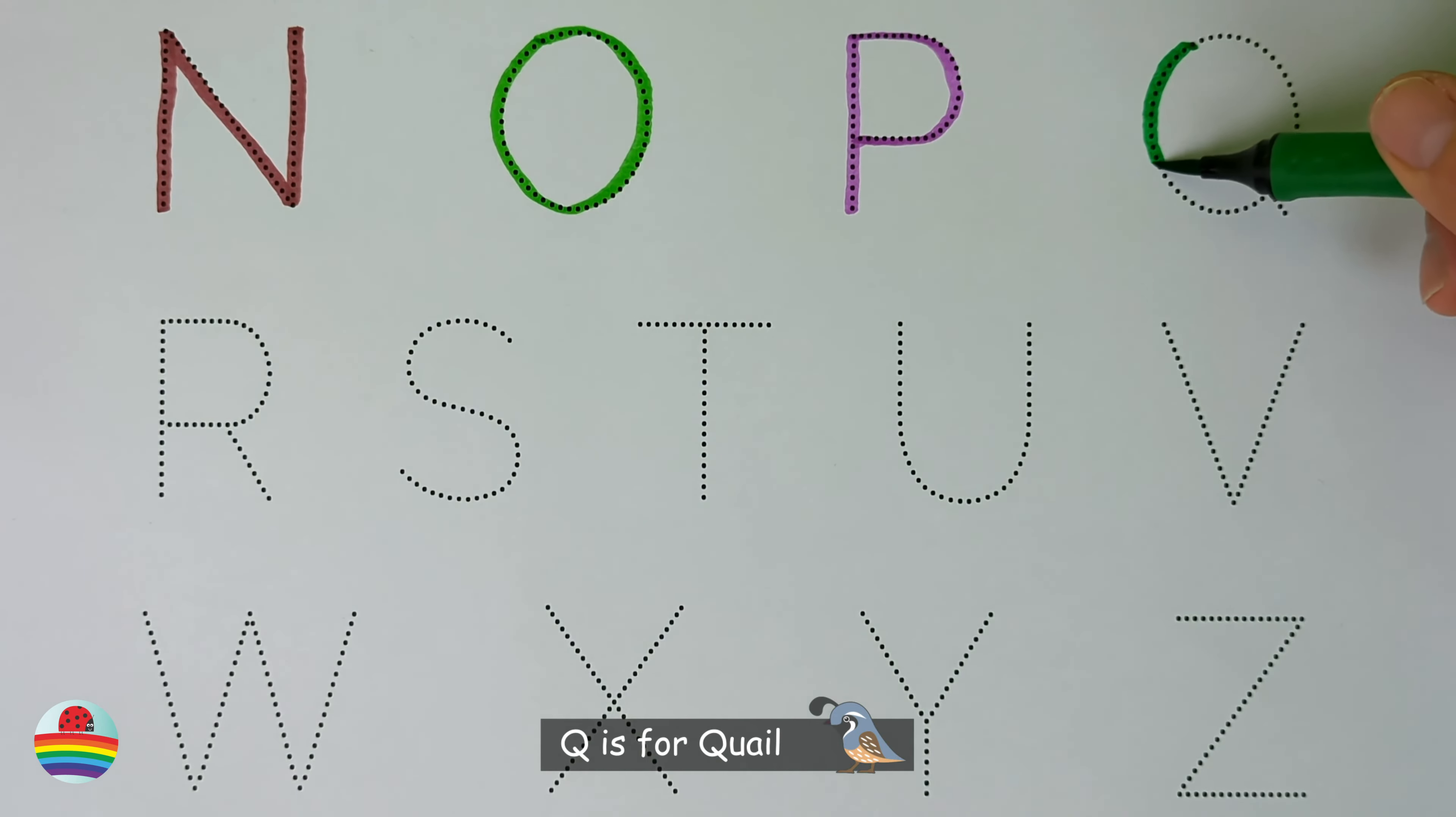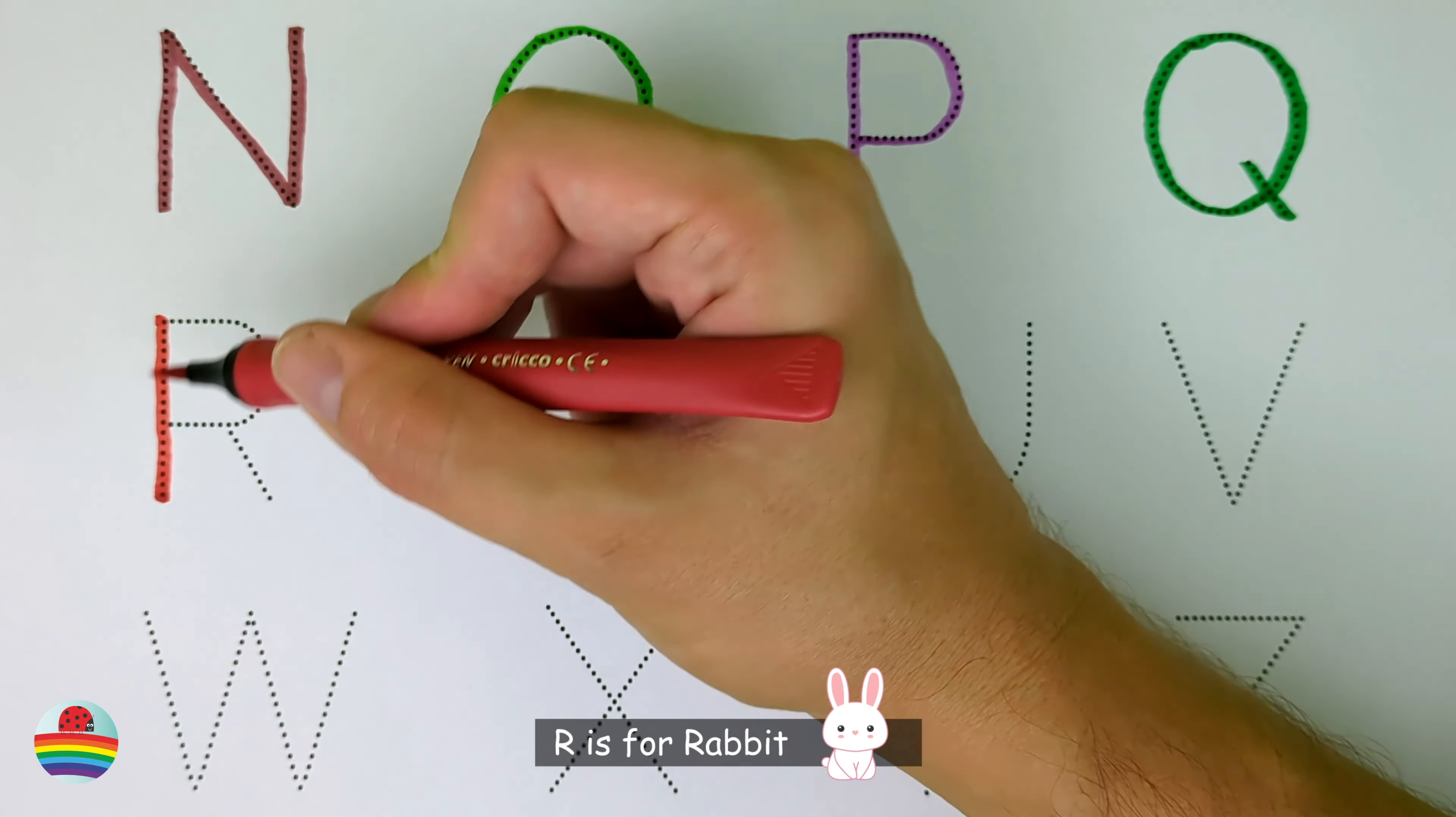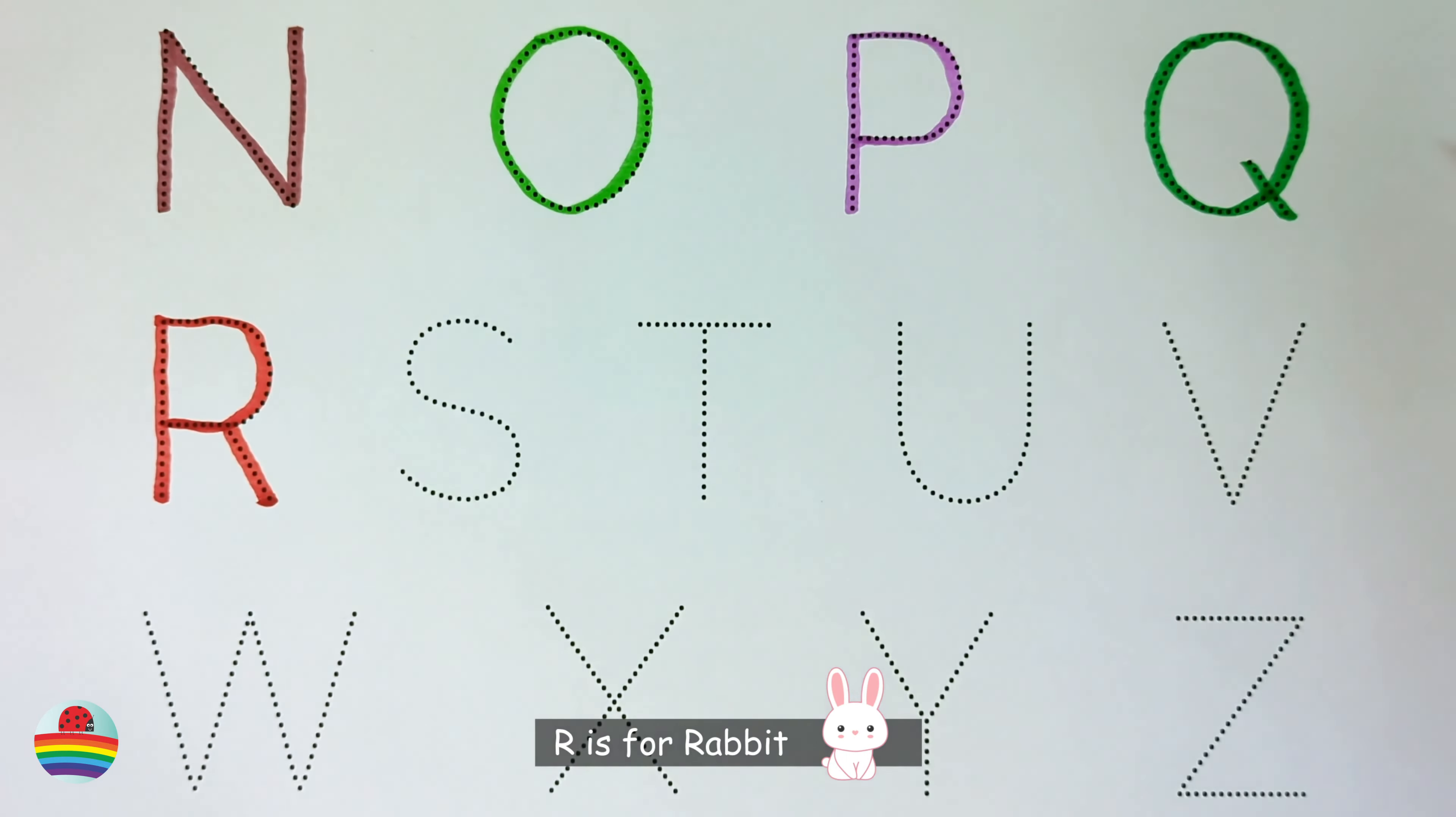Q. Q is for quail. Q. R. R is for rabbit. R.